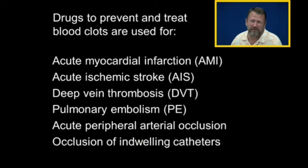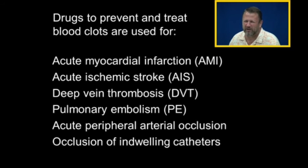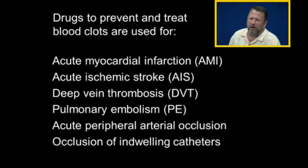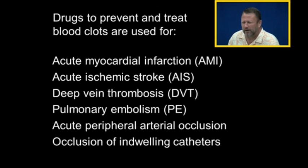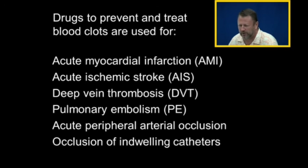We're going to talk about drugs used to treat blood clots — either to prevent them or dissolve them — in cases of myocardial infarction, heart attack, acute ischemic stroke, and deep vein thrombosis. The deep veins in the legs and arms can break loose and end up in the lungs, causing pulmonary embolism. Or we can have arterial occlusion in the legs caused by a blood clot, as well as occlusion of indwelling catheters. For nurses dealing with catheters, we can use drugs to either prevent occlusion or reverse it.